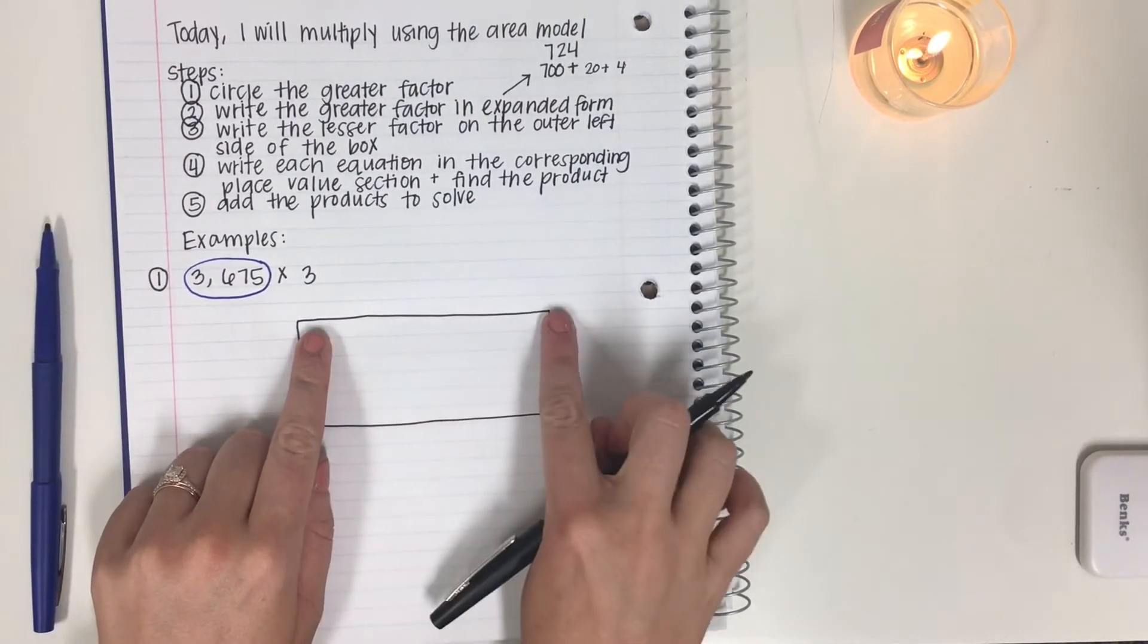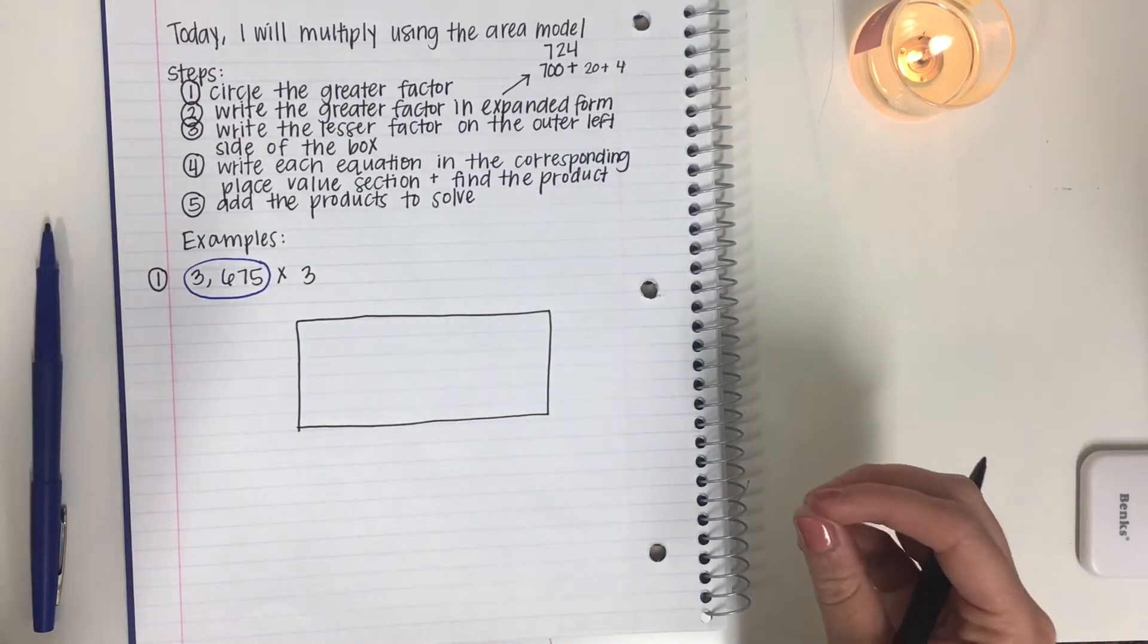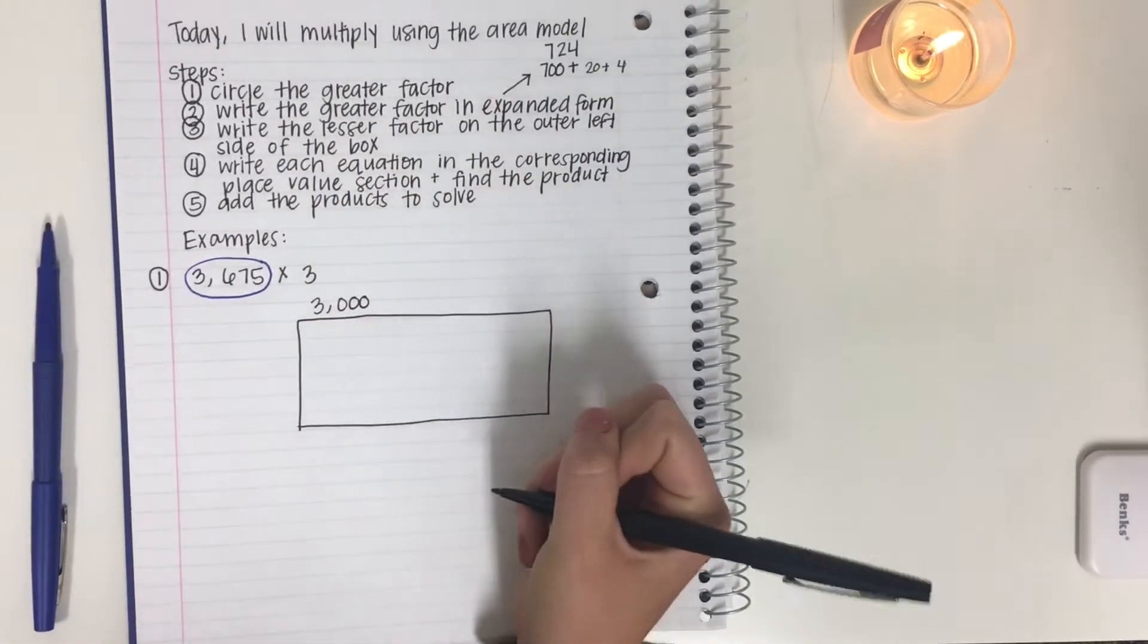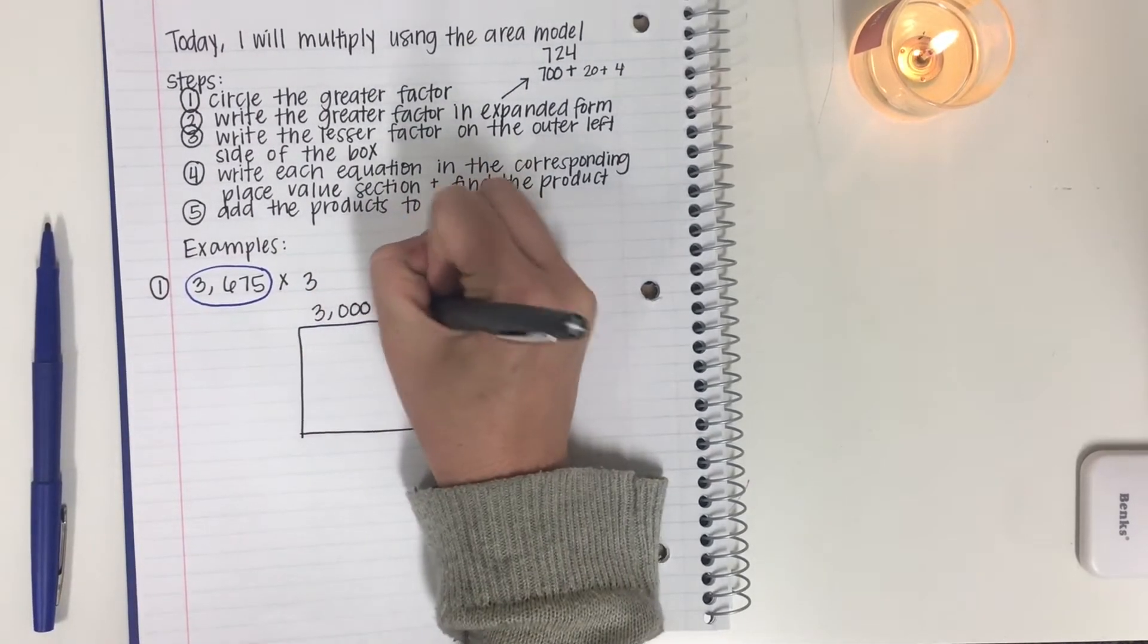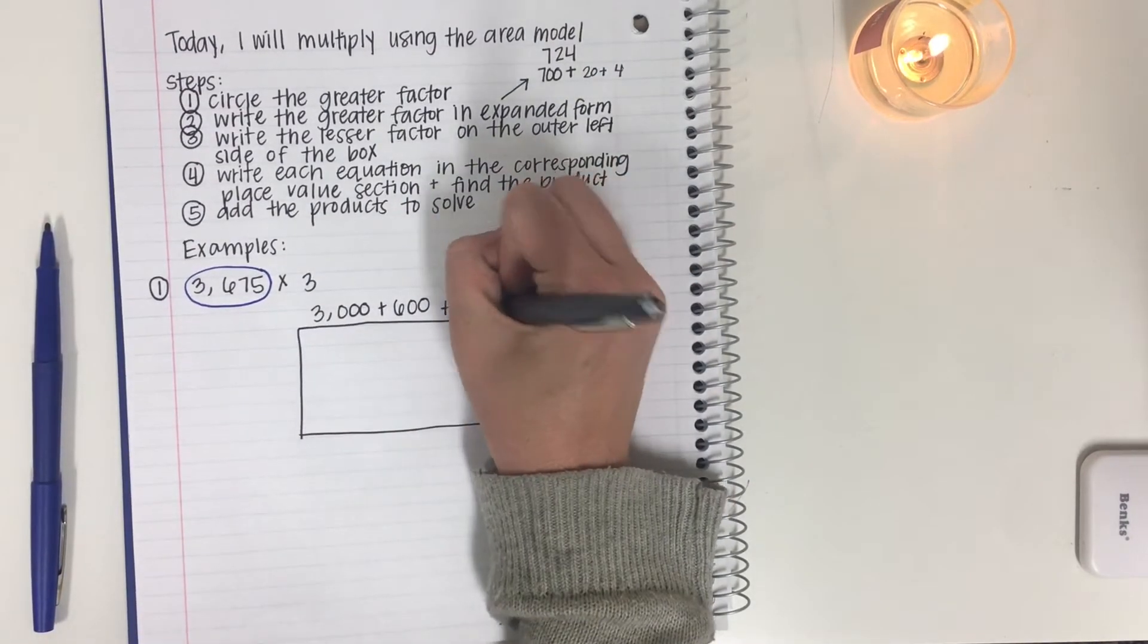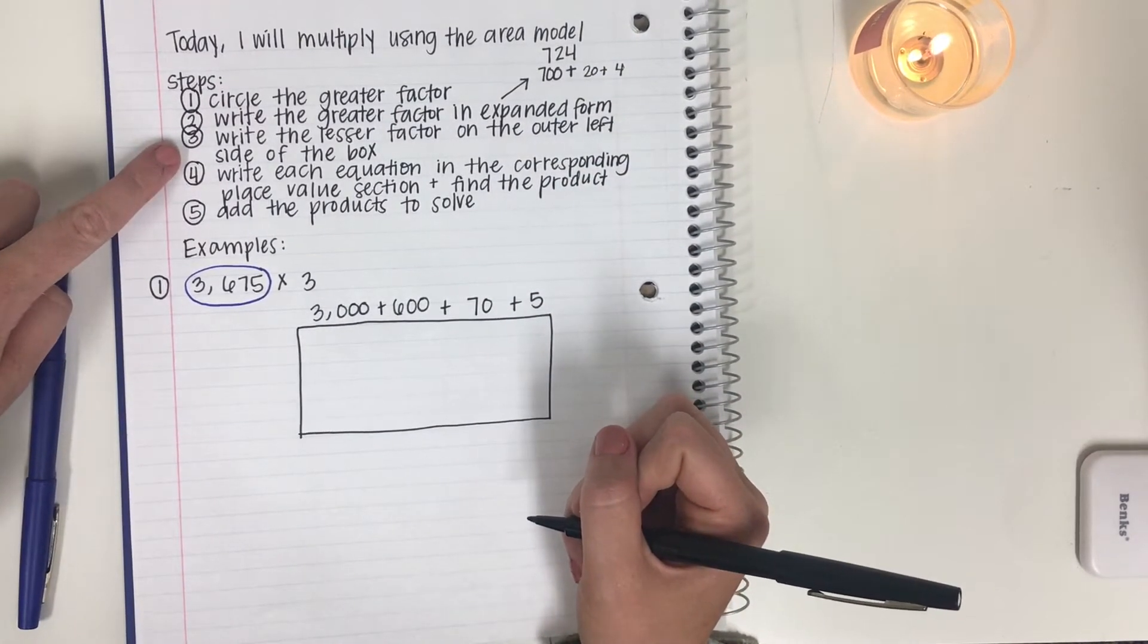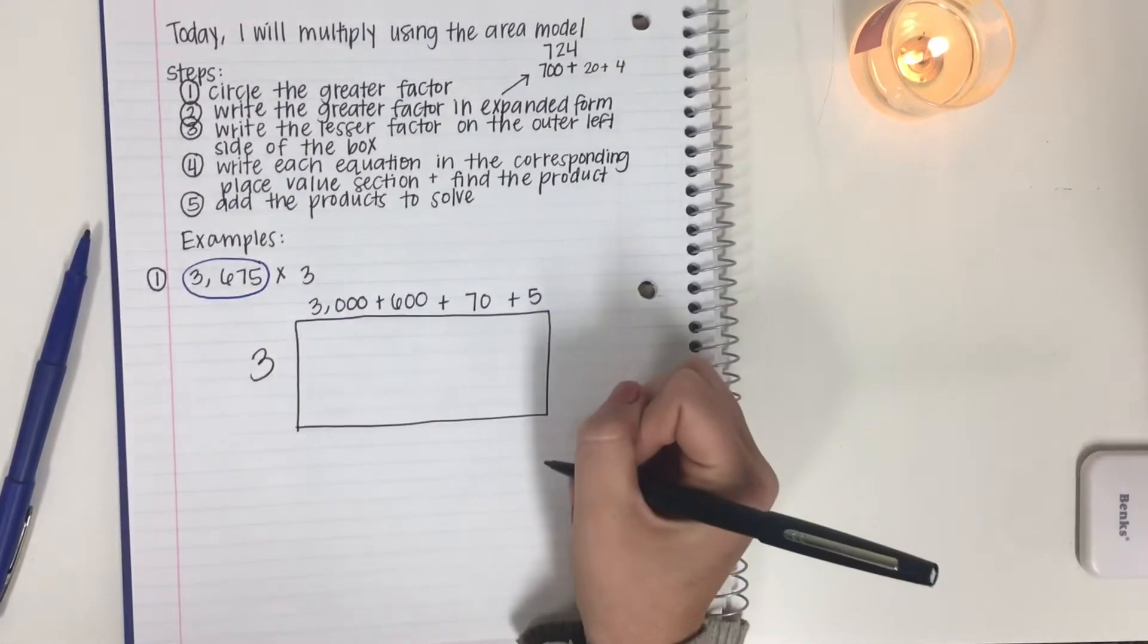So we do that right here on top. We take this number and we expand it, we stretch it. So we have our first place value is in the thousandth place. That's 3,000. So we're going to write 3,000 plus our next place value is in the hundreds, 600 plus 7 in the tens place, we have 70 plus 5. Step three, write the lesser factor on the outer left side of the box. So all we have left is 3. We're just going to write 3 nice and big on the left side.